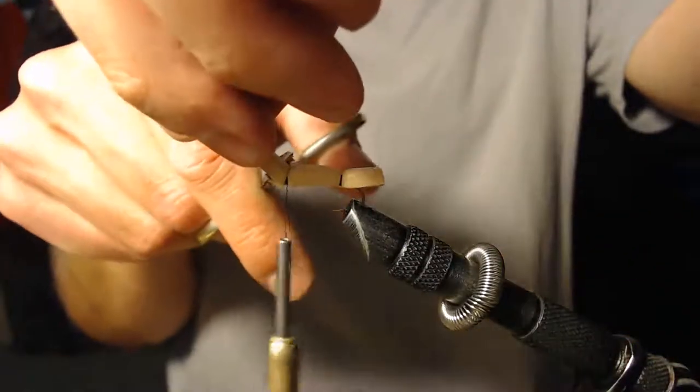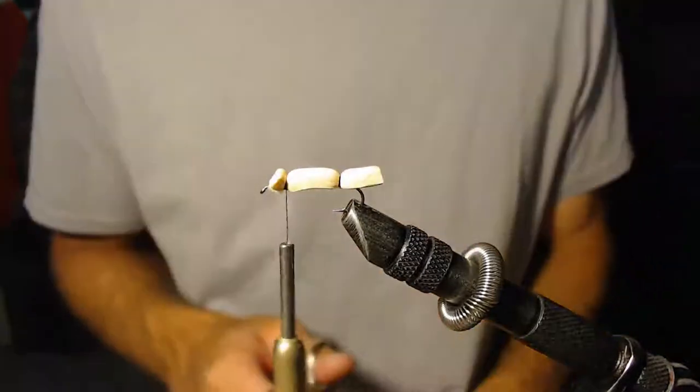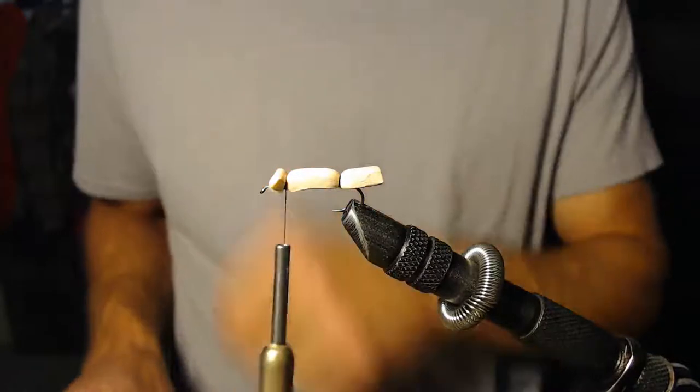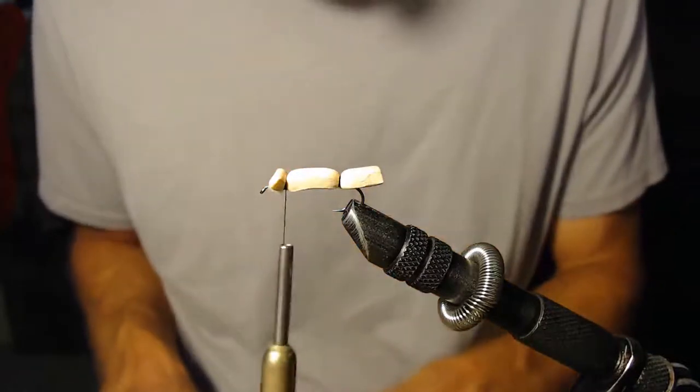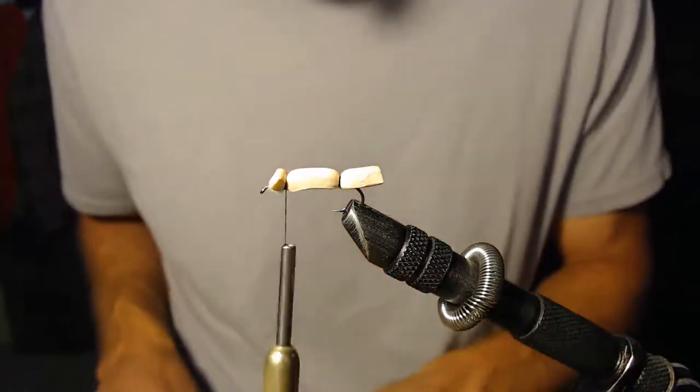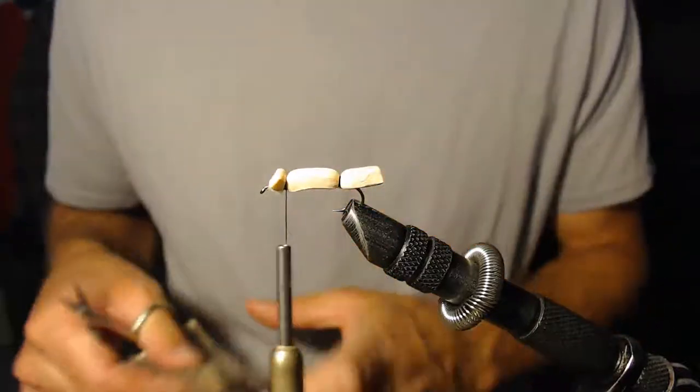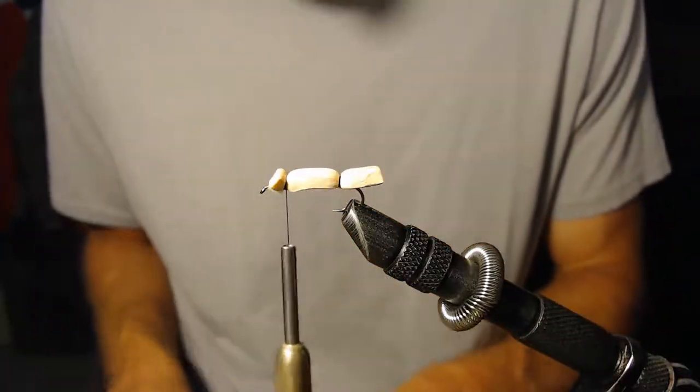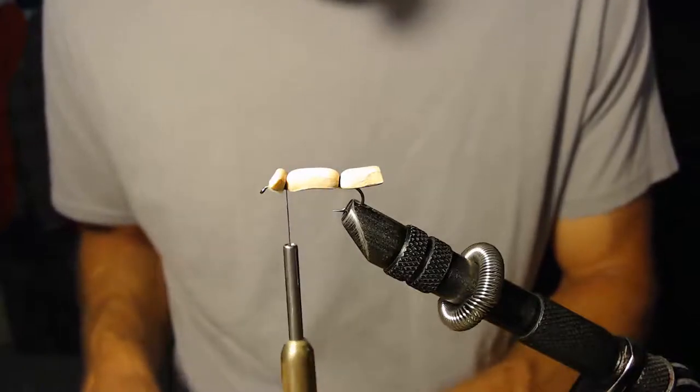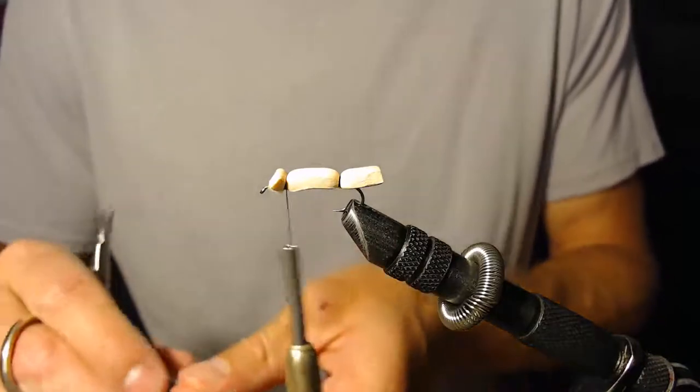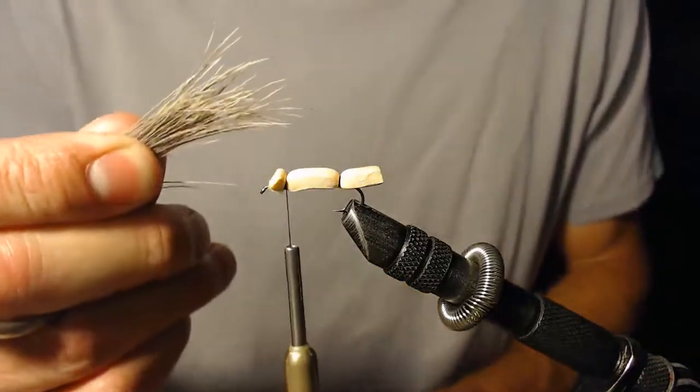Okay, I'm going to snip the foam just like that. Okay, now the next step is we're going to tie in some elk hair. I've just got a little patch of elk hair here, we're going to tie in our elk hair on the back. Get a good little pinch of it. Pretty good pinch of elk hair there.